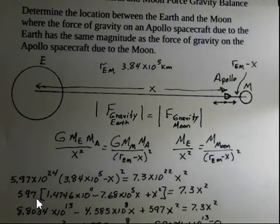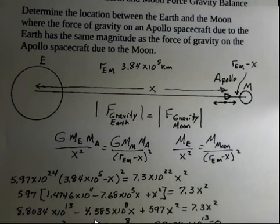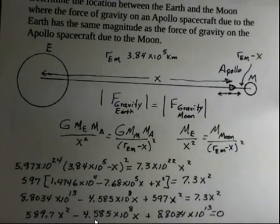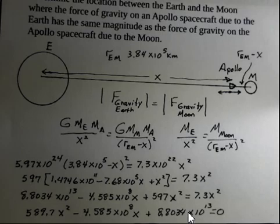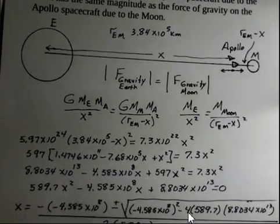Now, distributing the 5.97 through the square bracket, and it has to be multiplied on every term. If you need to, pause your video and check this with your calculator. Next, I'm gathering together like terms, and I'm keeping all the terms on the left side. So I'm subtracting 7.3x squared from the 5.97. That generates the 589.7x squared here. And we've got the same middle term and last term. So we have a quadratic equation, and it's well known how to solve a quadratic equation. You use the quadratic formula.